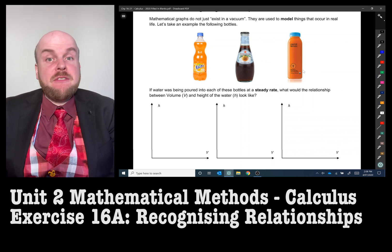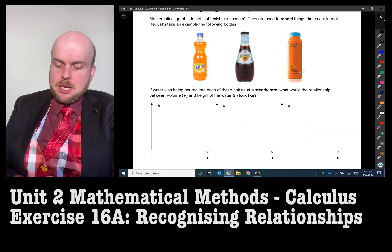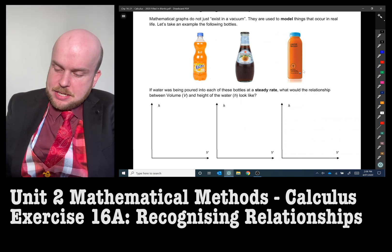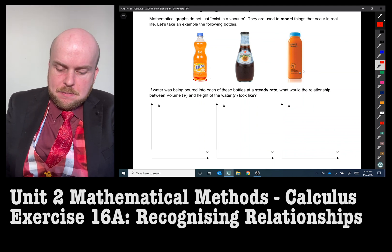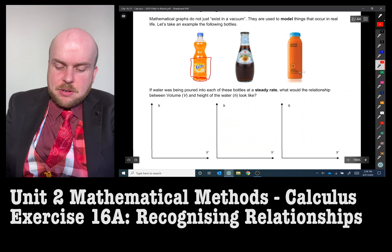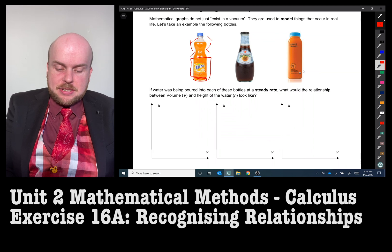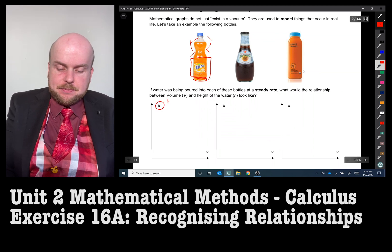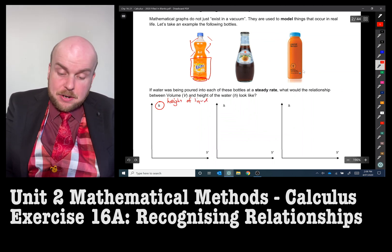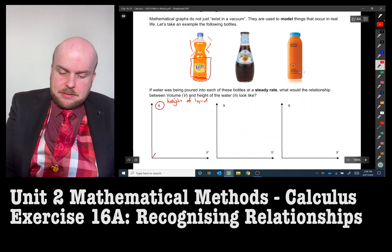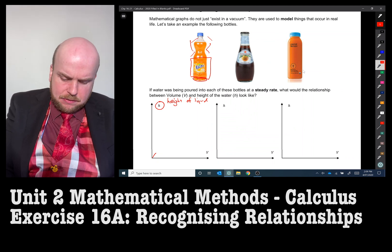We'll start with the Fanta bottle on the left. I promise you I'm not getting paid by Fanta for this. So you'll see it has a little indentation at the bottom. It's a little bit narrower at the bottom, fairly box-like, and then it comes in and goes out a bit and then comes back in again. So if I was pouring liquid, you can imagine the H is the height of liquid. At first, for that little tiny indentation, it would go up very quickly. But then, as we've got the wider part there, it's fairly constant.